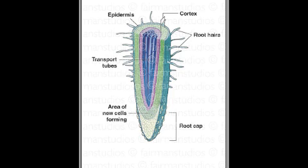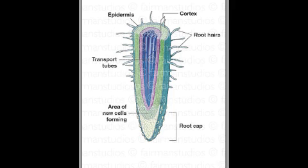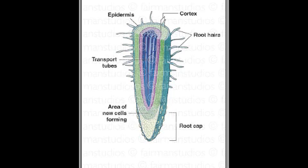The root has six things: the root tip, which is protected by the root cap. The water passes through the vascular rays until it reaches the stele, where the veins called the xylem carry water to the stem, and the phloem brings food to the stem. The cortex stores water and food as starch.